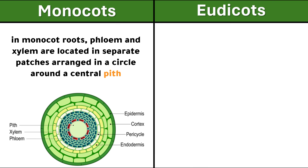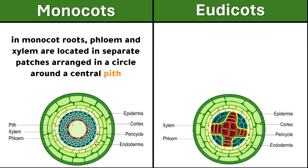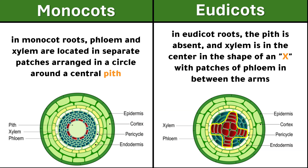In monocot roots, phloem and xylem are located in separate patches arranged in a circle around a central pith. In eudicot roots, the pith is absent and xylem is in the center in the shape of an X, with patches of phloem in between the arms.